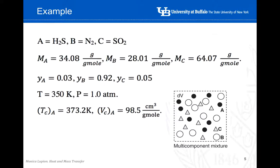Let's begin by drawing a diagram. This is a multi-component mixture where we have three different species: A, which is hydrogen sulfide (H₂S); B, which is nitrogen (N₂); and C, which is sulfur dioxide (SO₂). We can determine the molecular weight of each species from their chemical formulas. The molar fractions are: 3% for H₂S, 5% for SO₂, and 92% for nitrogen. We also know the temperature, pressure, and the critical temperature and critical volume for H₂S.